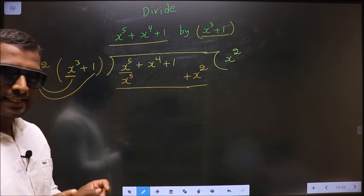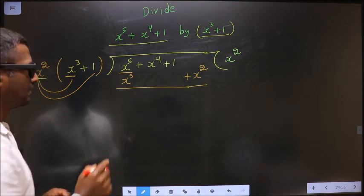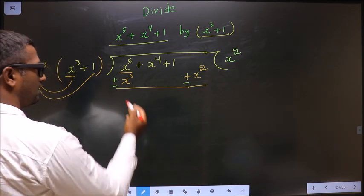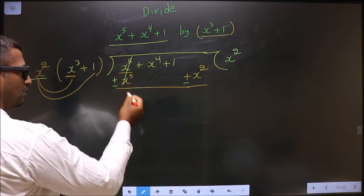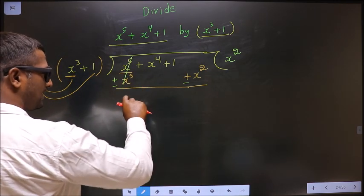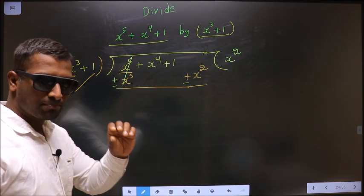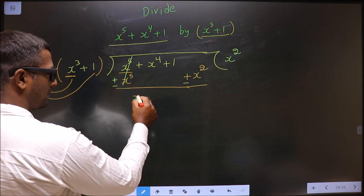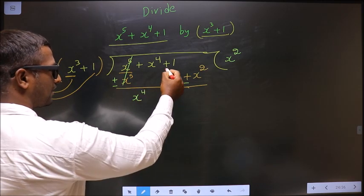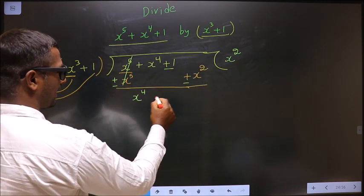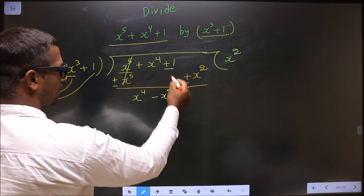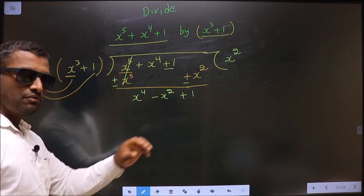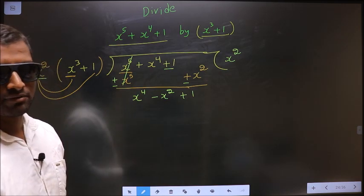Next, change the signs. Here it is plus, make it minus. Here it is plus, make it minus. Now these cancel out. We should write the remainder in the decreasing powers of x. First x power 4, after that I write minus x square, and finally the constant.